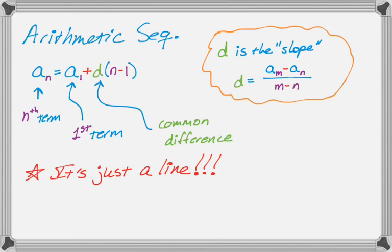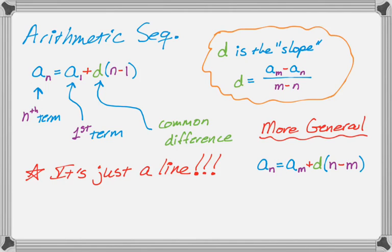And because you can treat it as a line, you can actually generalize this. So the formula that I've written so far is the formula you'll find in almost every book. But since you can use any points on a line to write the equation of a line if you know point slope form, we can really write this as a sub n is equal to a sub m plus d times the quantity n minus m. It's really important that the m's match up. So if you're using the 53rd term, you're going to have the quantity n minus 53 when you write your formula.